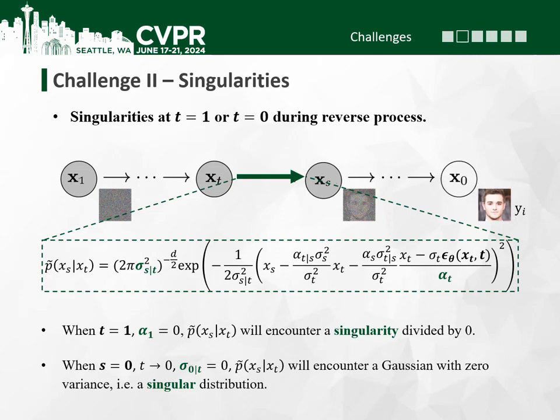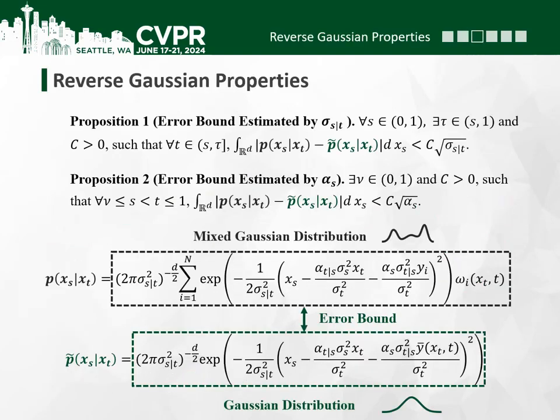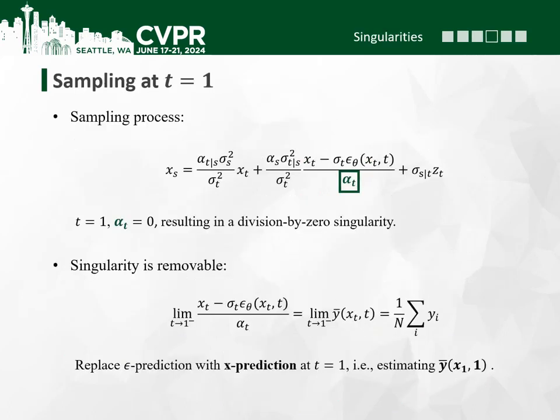To avoid singularities, existing methods restrict the time intervals to [epsilon_1, 1 minus epsilon_2]. To tackle these two challenges, we first propose Proposition 1 and Proposition 2 to prove that the reverse diffusion process can be approximated by a Gaussian distribution. Under such approximation, we can use the Gaussian sampling function for sampling.